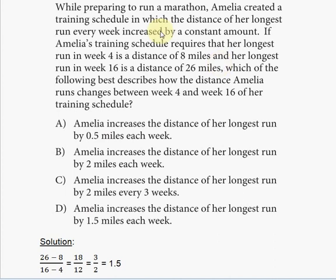While preparing to run a marathon, Amelia created a training schedule in which the distance of her longest run every week increased by a constant amount. If Amelia's training schedule requires that her longest run in week 4 is a distance of 8 miles and her longest run in week 16 is a distance of 26 miles, which of the following best describes how the distance Amelia runs changes between week 4 and week 16 of her training schedule?